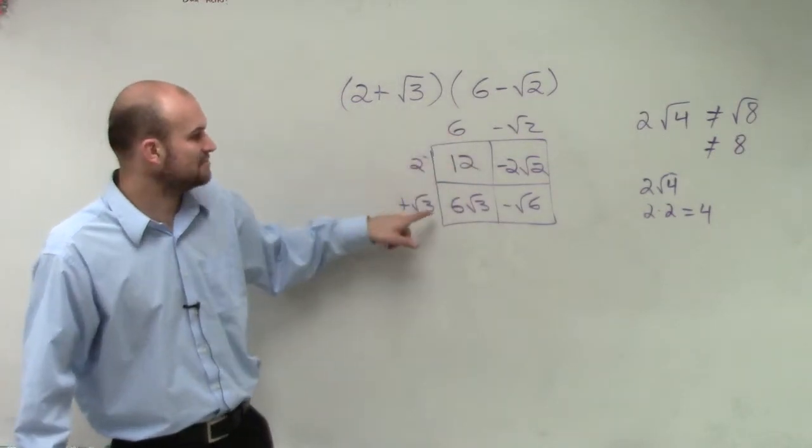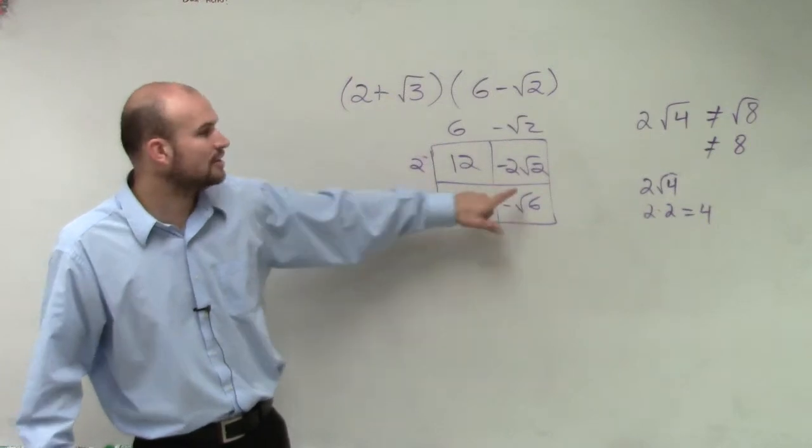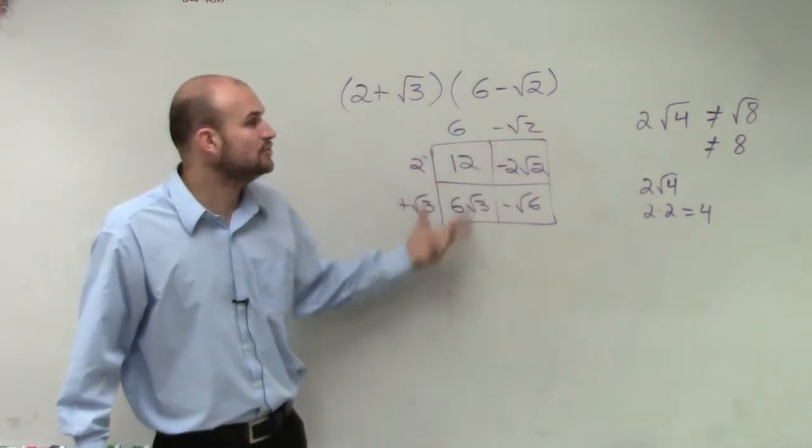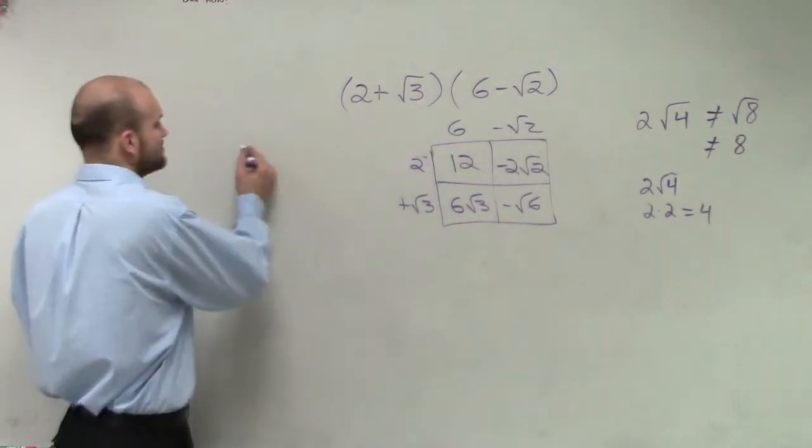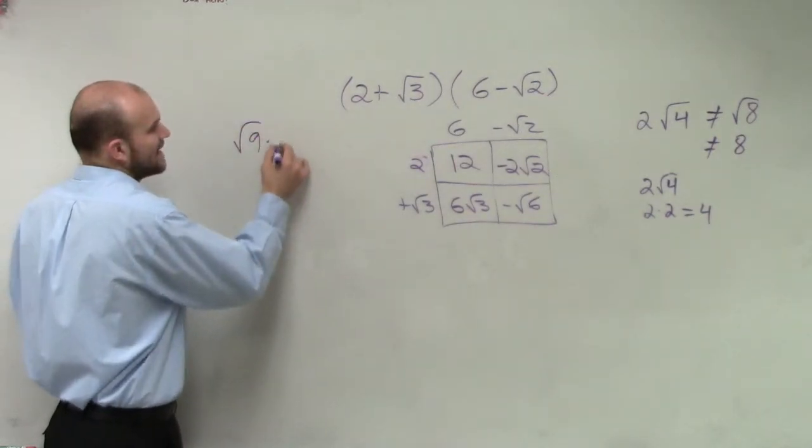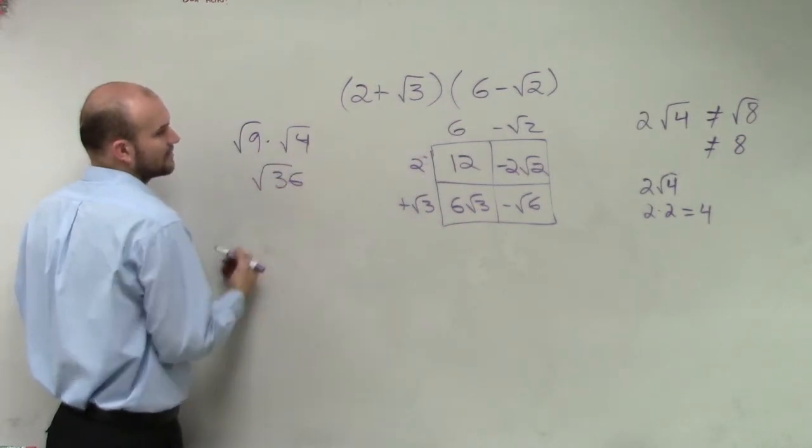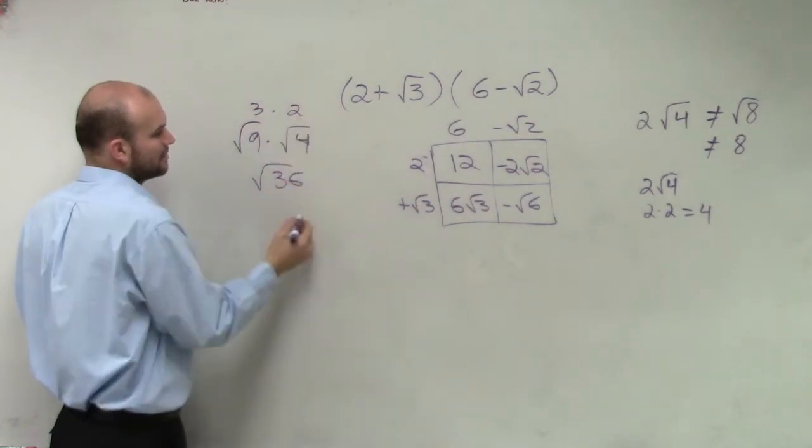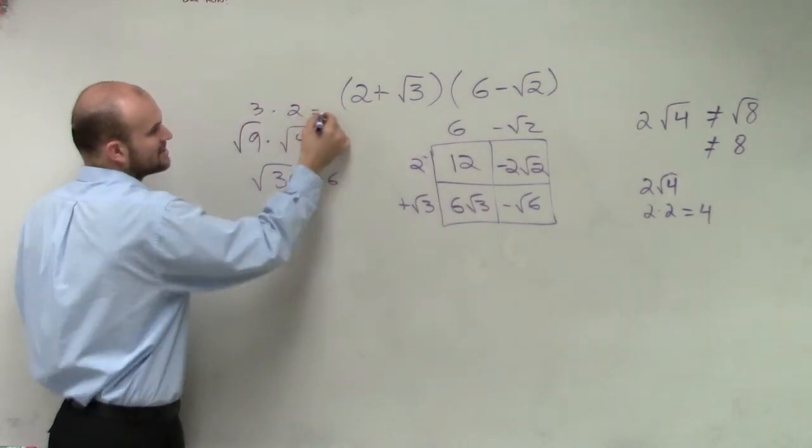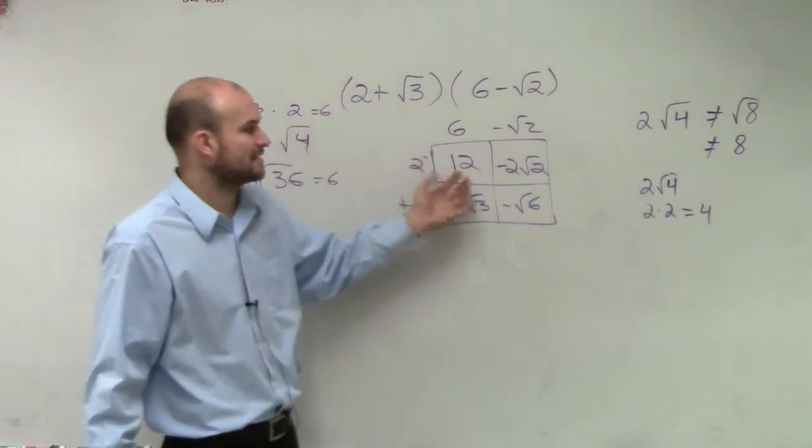But when you have two radicals, you can multiply inside. We talked about this before: square root of 9 times square root of 4 is equal to square root of 36. That's 3 times 2, and this is also equal to 6. So when you multiply, you can multiply inside as long as they're both radicals.